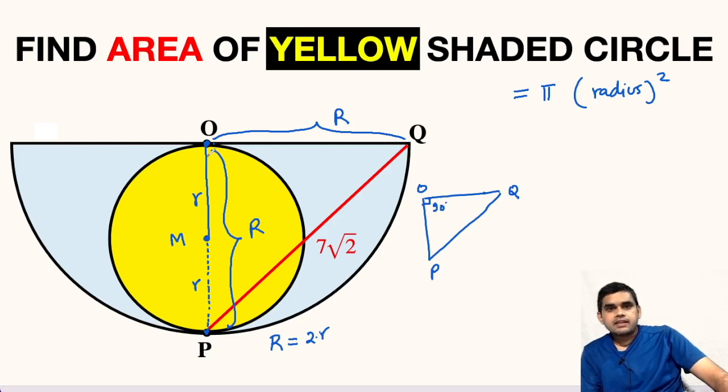Why? We have a theorem that this OQ will be tangent to this yellow circle and OM, this line segment is the radius. If we have a circle and a tangent, then from the center to the point of contact, any line segment makes 90 degrees with each other. So this is a right angle triangle.